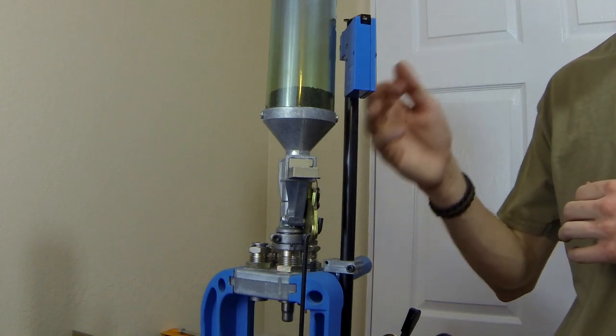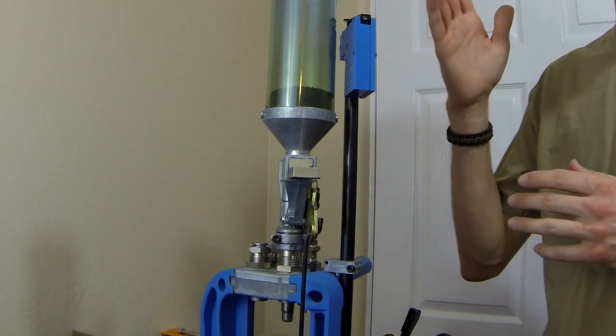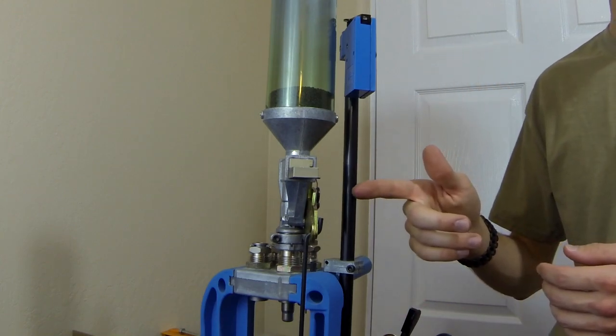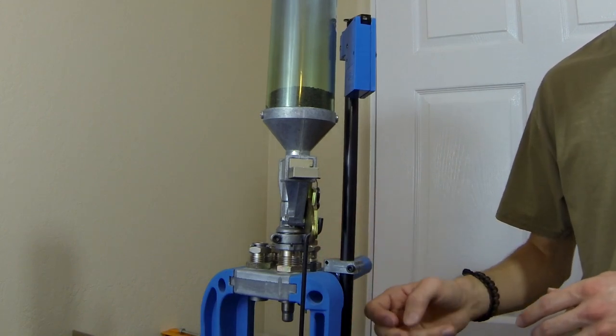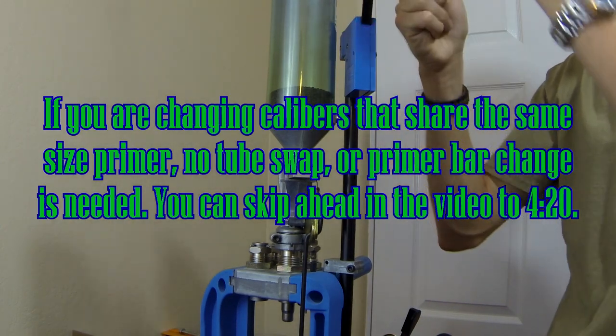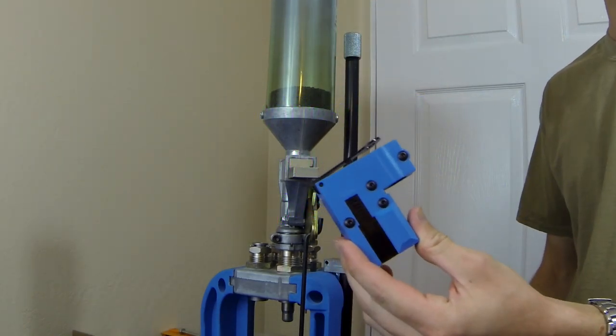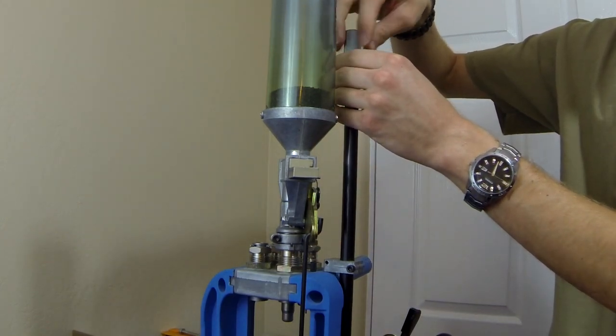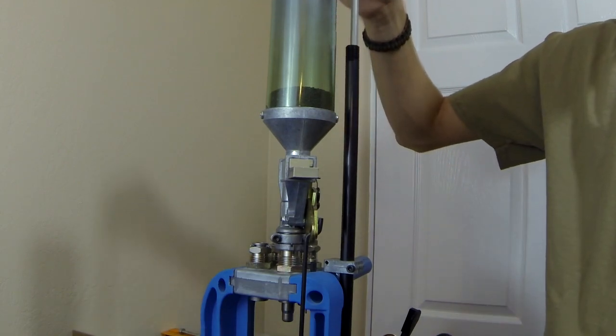First things first, I would highly recommend you take the primers out of the tube if you haven't already finished your entire primer tube. In this case it is empty. If you still have primers in here, you could simply run this back and forth, picking up individual primers and then removing them by hand. We're gonna swap the tube first. So I'm gonna remove this, take off the primer alert system here, remove this knurled piece here, and then pull out the tube.